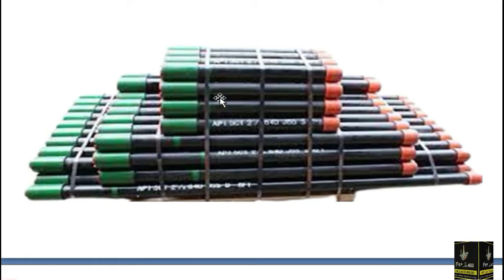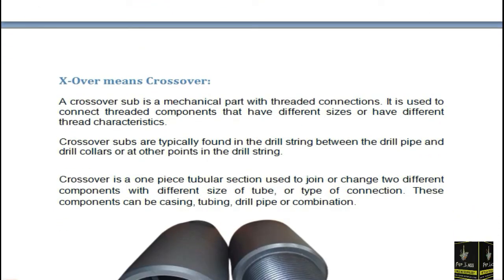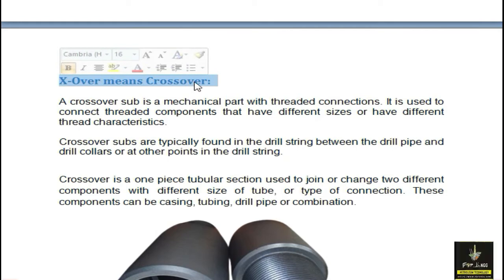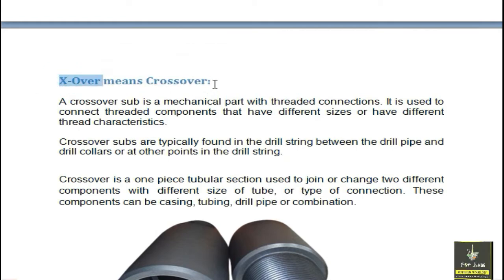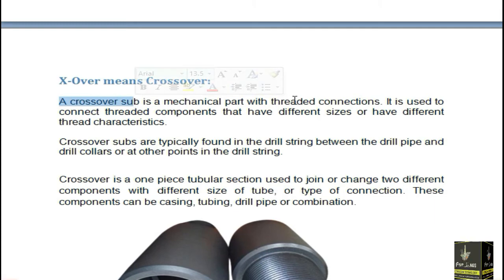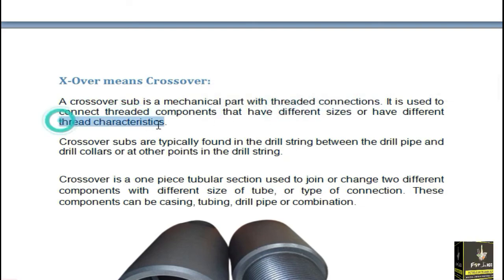In this figure you can see there are different sizes of pup joints available — 2 feet, 3 feet, 4 feet, and so on. Now, what is a crossover? Some people in the oil and gas industry write it as crossover, some as X-over. We can also call it a crossover sub. The crossover sub is a mechanical part with a threaded connection.